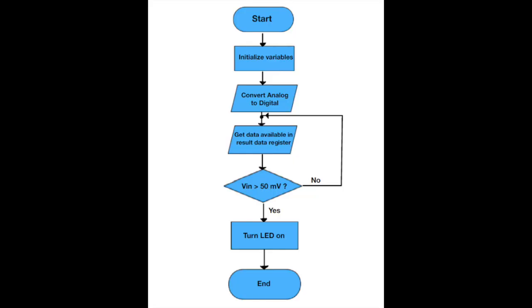This flowchart represents how the code in the PSOC works. First, it starts by initializing the variables and converting any of the analog inputs from the microphone to a digital signal. Based on previous testing, we set a threshold of 50 millivolts, and so anytime you clap or the microphone hears a frequency of 7000 Hz and above, the LED light will be turned on for precisely 10 seconds.